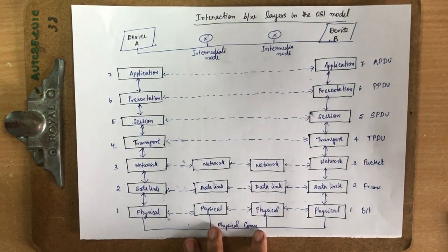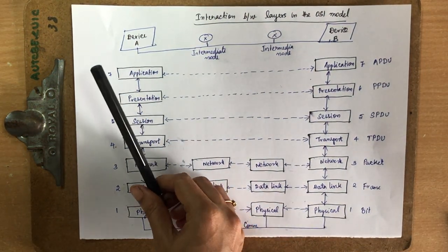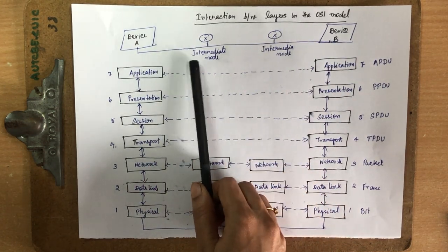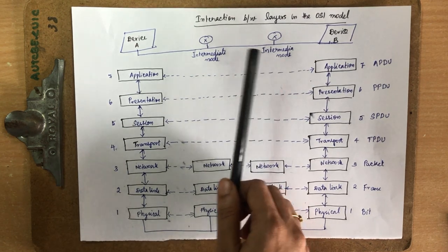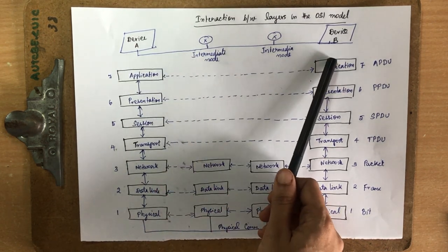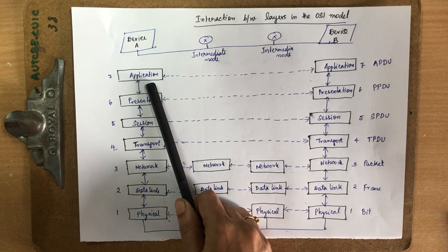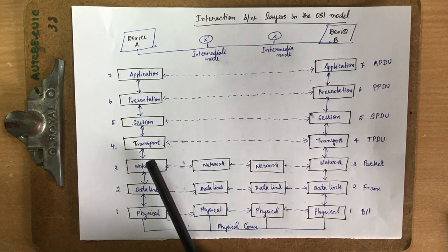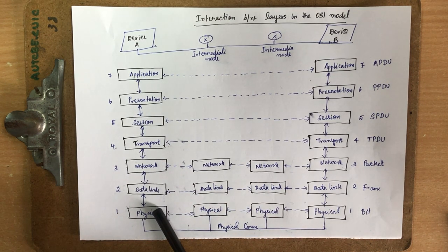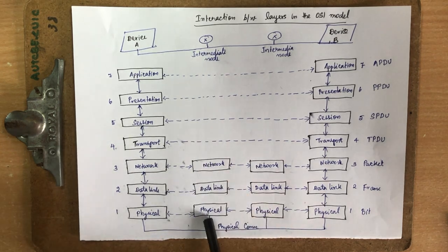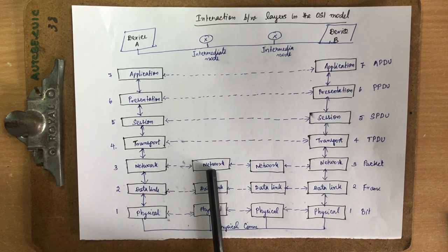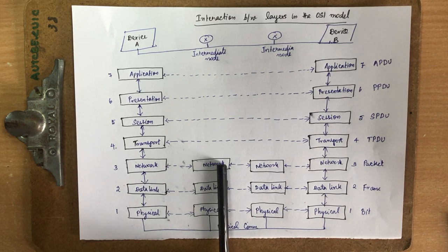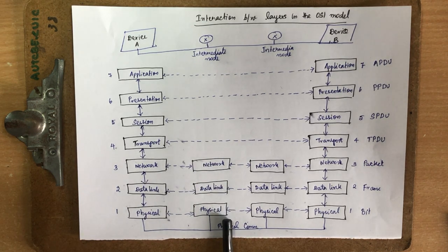In this diagram, you can see that device A wants to communicate with device B, with two intermediate nodes in between. When device A sends a message, it passes through the application, presentation, session, transport, network, data link, and physical layers, and is transmitted through a transmission medium. It reaches an intermediate node, where the message is passed up to the network layer only, since all routing information and routing processes are handled there. It then moves to the next intermediate node and finally reaches the destination.